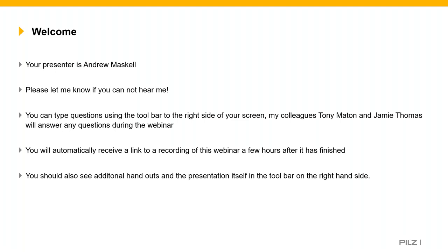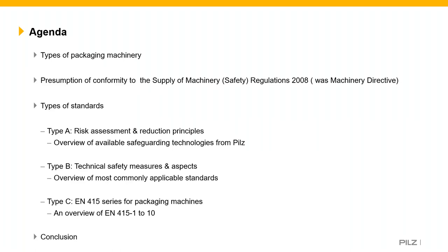Today we'll cover the different types of packaging machinery, the presumption of conformity to the supply of machinery regulations (previously the machinery directive), designated standards, an overview of different types of standards and commonly used packaging machinery. We'll then get into the main body with type C standards — specifically the EN 415 series, parts 1 to 10 — and finish with a conclusion.